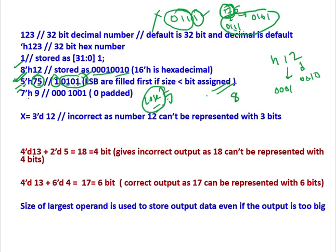Here 7'h9. 9 is 1001. But here we are assigning 7 bit data. We can represent 9 with the help of 4 bits only. But here 7 bits, so the rest of the 3 bits can be 0. So what Verilog does? MSB is filled from the LSB side. LSB are filled first. So MSB is filled with 0. Or 0s are padded.